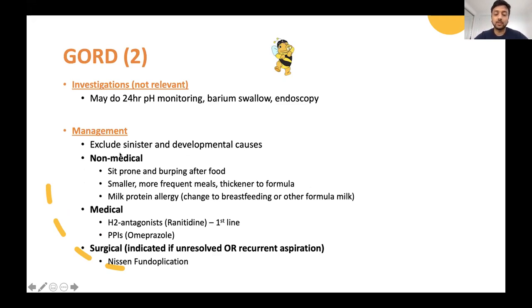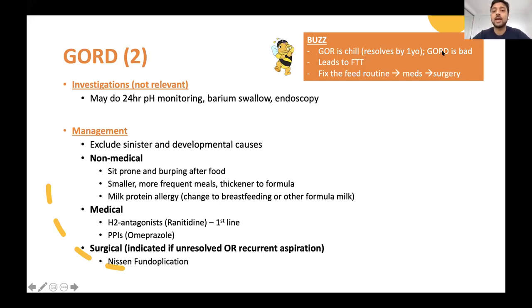The non-medical approach for GORD makes sense: sit them upright after food, burp them, give smaller meals more frequently, and add thickener to formula so they don't regurgitate. Rule out milk protein allergy. For medications, it's the same as adults, PPIs and ranitidine, but in children we prefer ranitidine first. Surgery is Nissen fundoplication. Throughout my slides you'll see this orange box, if anything just learn this and you'll be good.